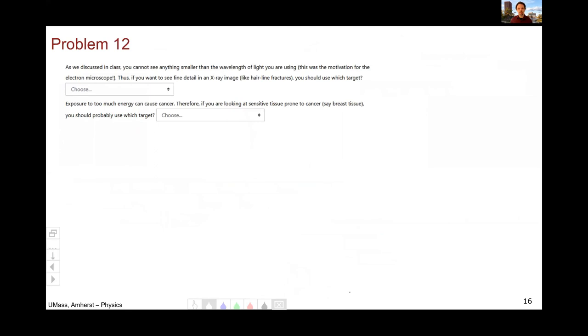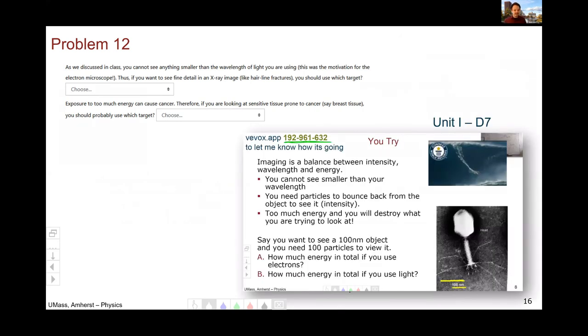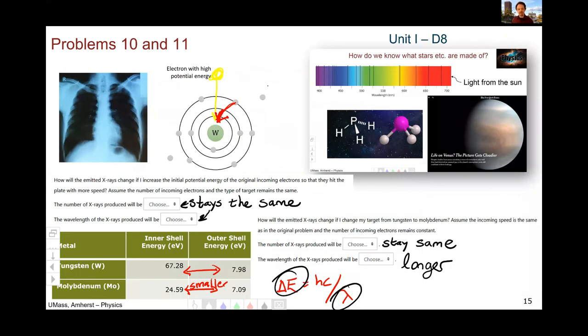Slide 12 was about imaging and what you might want to use. So the imaging part was unit one day seven, where we talked about the wavelength has to be small. But if we are interested in fine detail, we need a small wavelength, as we talked about on unit one day seven. So for that, we want tungsten, because as we just saw in the previous slide, molybdenum gives us a longer wavelength and we want a short one to see fine detail. So teeth, tungsten, because teeth are small and the things you're looking for are small.